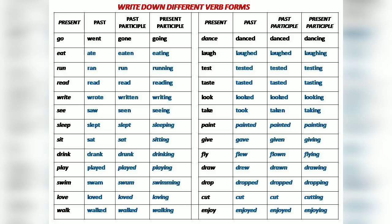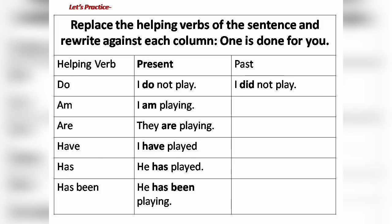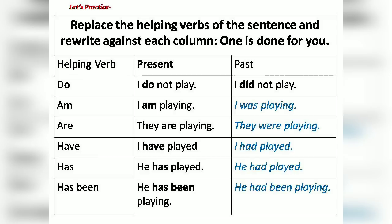Write down different verb forms. Now check your answers. Next, replace the helping verbs of the sentences and rewrite against each column — one is done for you. Now check your answers.